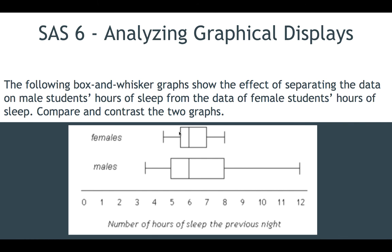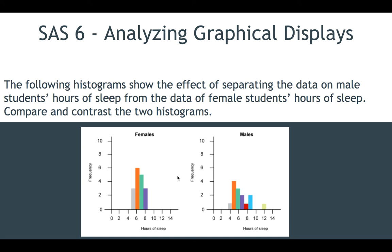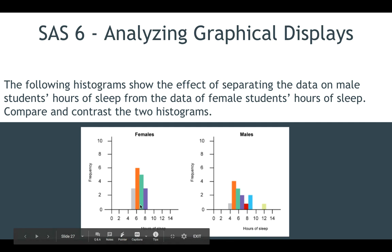Now this is a histogram showing the separation. As long as the bandwidths are the same, you should be able to see pretty clearly that the distributions are different. If they had different bandwidths, you could easily convince someone there's no difference, because the histograms might look similar even when they're not.